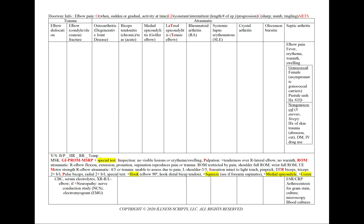In septic arthritis, we'll find elbow pain with a fever in our vital signs, and erythema, warmth, and swelling on inspection and palpation. For gonococcal septic arthritis, it can be a female patient — as they're asymptomatic gonococcal carriers — with a characteristic pustular rash and a history of STDs or multiple sexual partners. The non-gonococcal form, staph aureus or strep, will be seen with a history of skin trauma, abrasions, cuts, diabetes, or IV drug use. We'll order ESR-CRP, arthrocentesis for gram stain, culture, microscopy, and blood cultures.